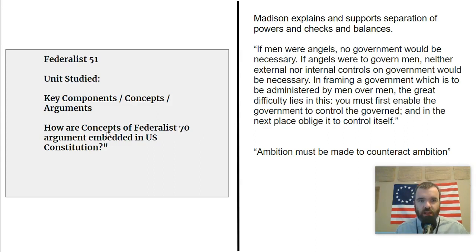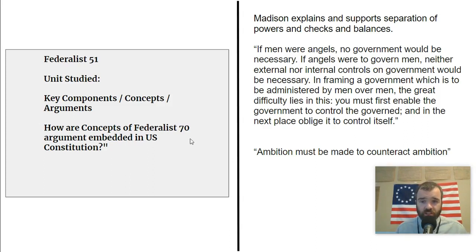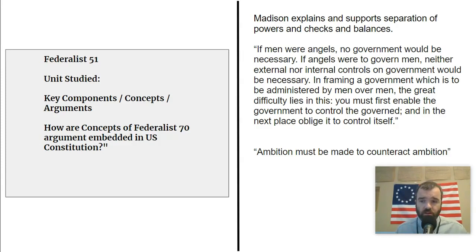When it says how are concepts of Federalist 51 embedded in the Constitution, you want to give examples of checks and balances. You want to be able to give examples of the different powers that each of the three branches have — they're embedded all over the place, woven into the fabric of the document. So the Constitution and Federalist 51 are documents we need to know.